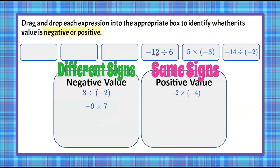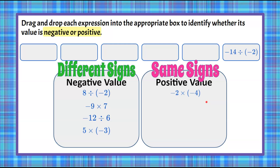Next: negative 12 divided by 6. Two different signs, so we're going to have a negative quotient. Then we have 5 times negative 3 — again, two different signs — so the product here will be negative. And then our last: negative 14 divided by negative 2. Both values are the same sign — they're both negative — so our quotient here would be positive because they have the same sign.